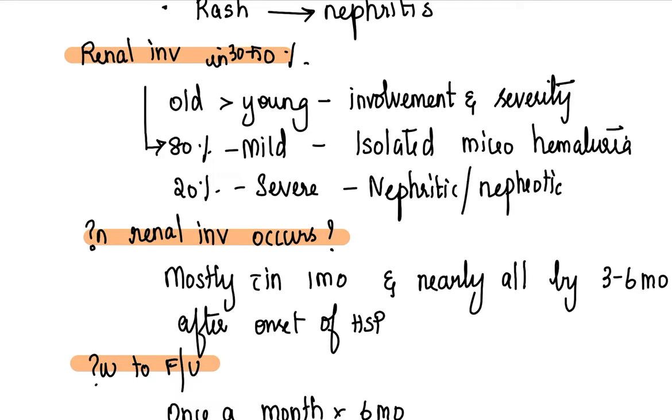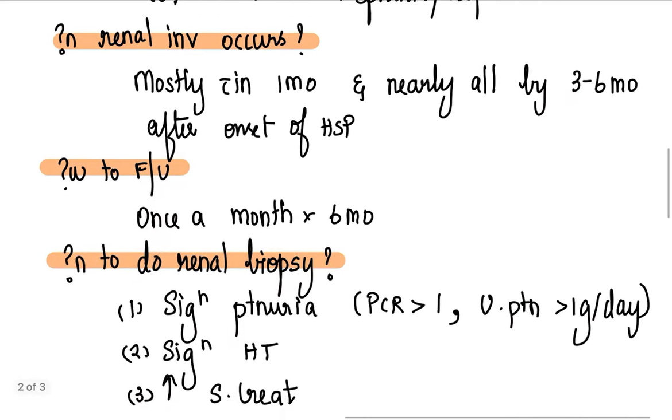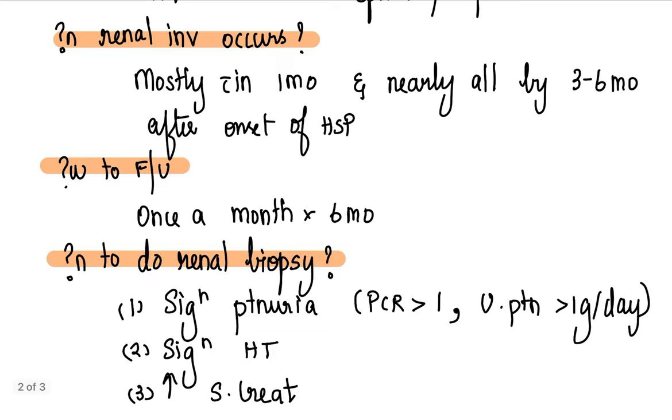When does a renal involvement occur? Most of the renal manifestation occur within six months. That is why you follow up a patient of Henoch-Schonlein purpura for nephritic presentation for six months. Beyond that period, you don't expect them to have a renal complication. Most of the renal involvement occurs within one month and nearly all by three to six months, and very, very rare after six months. So that's how long you're going to follow up.